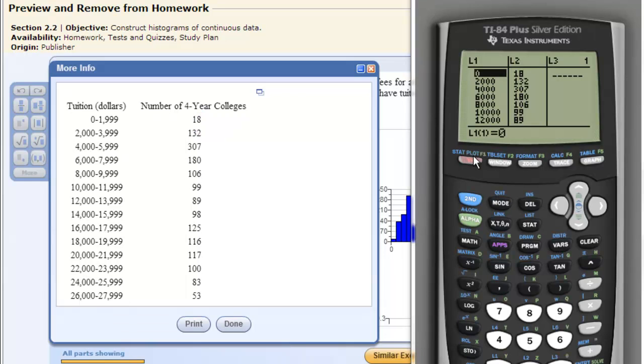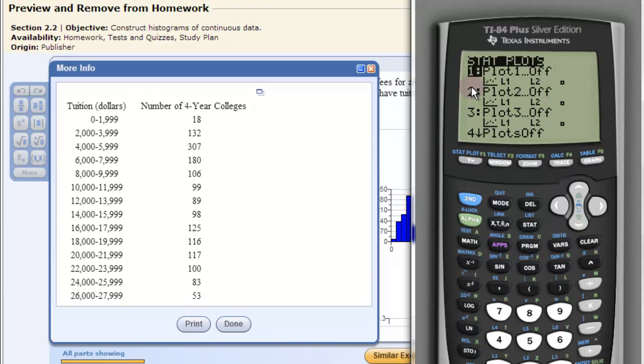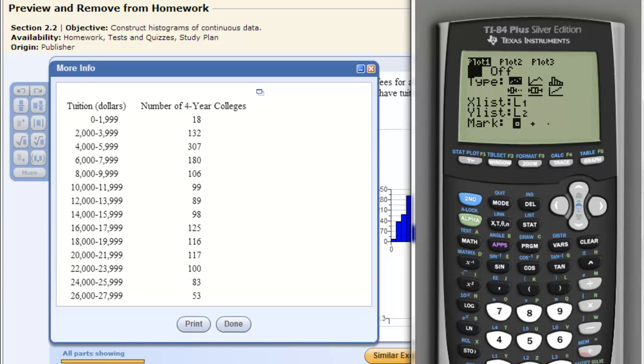Then we go into the stat plot. Once we have that information in there, we go second stat plot. We're going to plot one, hit enter, turn it on by hitting enter again.